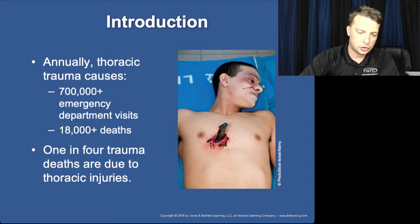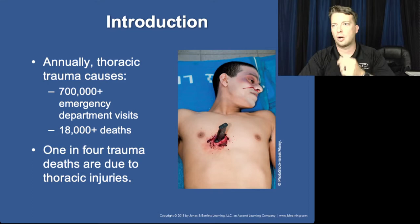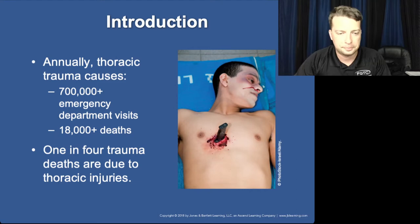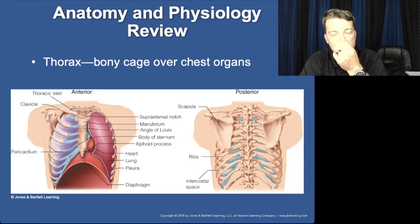You can make statistics say anything you want, but one in four trauma deaths are due to thoracic injuries. Thoracic injuries are fairly high on the trauma list because of the vital organs contained within the thorax.